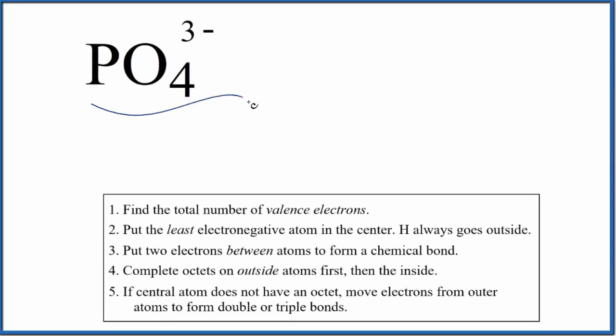Let's draw the Lewis structure for PO4 3 minus. This is the phosphate ion. When we draw Lewis structures, the first thing we need to do is find the total number of valence electrons.